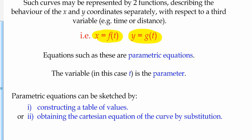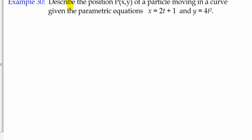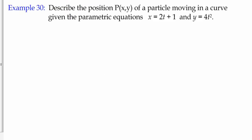Here's an example here. Example 30 is to describe the position in terms of its coordinates of a particle moving in a curve with these parametric equations. So x equals 2t plus 1, y equals 4t squared. At the moment we don't recognize that function, although I will tell you that it's a function you've probably come across already.